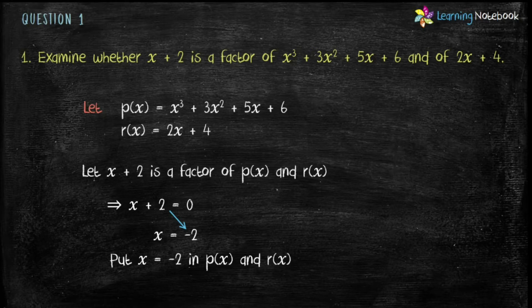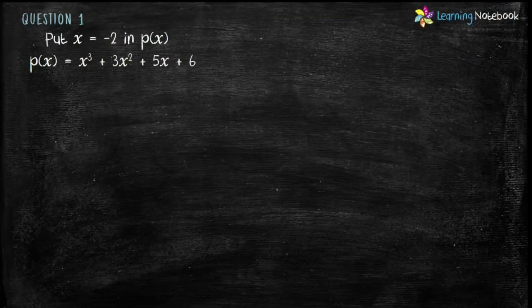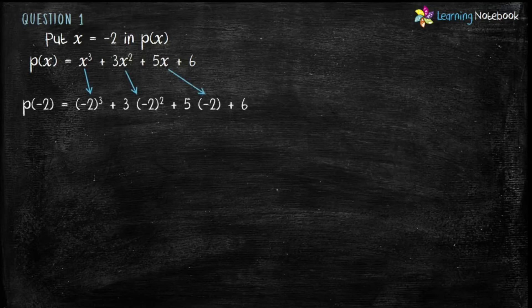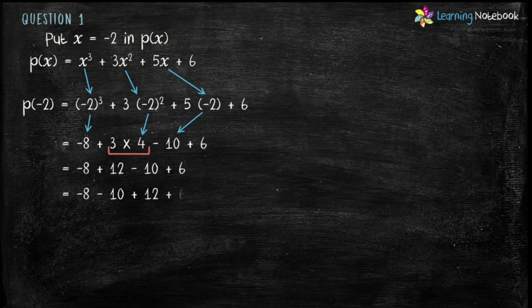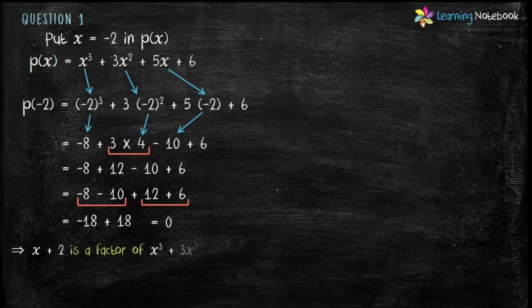Now let's put x equals minus 2 in P(x). If by solving this we get the value of both polynomials as 0, then we can say x plus 2 is a factor of P(x) and R(x). We get P(−2) equals (−2)³ plus 3 into (−2)² plus 5 into (−2) plus 6. That gives us minus 8 plus 3 into 4 minus 10 plus 6, which equals minus 18 plus 18, equals 0. Therefore, P(−2) equals 0.